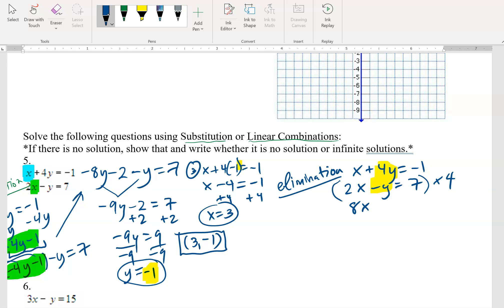That makes that 8x minus 4y equals 28. Bring down the other equation. x plus 4y equals negative 1. This is now set up to eliminate. The y's now can cancel. 8x plus x is 9x. 28 minus 1 is 27. Dividing by the 9, x equals 3.